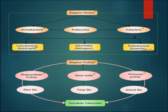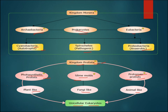Kingdom Protista shows the link with all other higher organisms. Plant-like protista are photosynthetic. Slime molds belong to protista and are fungi-like, showing the connecting link between fungi and protista. Protozoan protista show the connecting link between protista and Animalia because they are animal-like. All protista are unicellular and eukaryotic, unlike Monera which are prokaryotic.